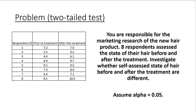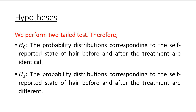At this point it should be easy to detect that we perform a two-tailed test — we are only interested in whether the self-assessed state of hair is different before and after the treatment. Maybe the treatment makes hair worse, but even in that case we can reject the null hypothesis. The null hypothesis states that the probability distributions corresponding to the self-reported state of hair before and after the treatment are identical; the alternative hypothesis states that they are different.